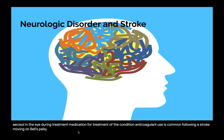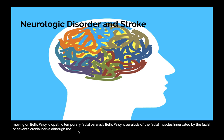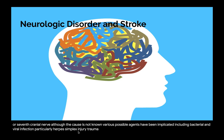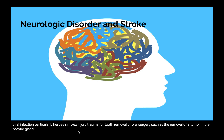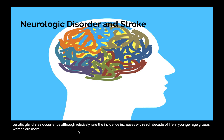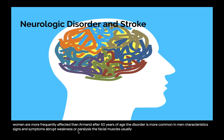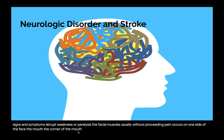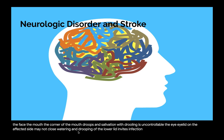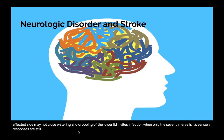Bell's palsy is paralysis of the facial muscles innervated by the facial or seventh cranial nerve. Although the cause is not known, various possible agents have been implicated, including bacterial and viral infection — particularly herpes simplex — and injury or trauma from tooth removal or oral surgery. Although relatively rare, the incidence increases with each decade of life. The mouth: the corner droops and salivation with drooling is uncontrollable. The eye: the eyelid on the affected side may not close, and watering and drooping of the lower lid invites infection. When only the seventh nerve is affected, sensory responses are still intact.